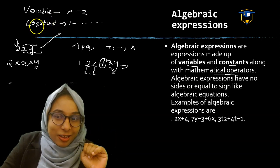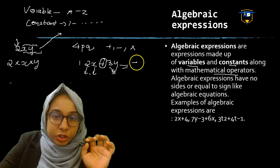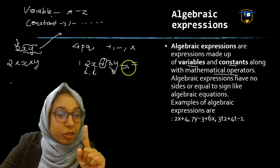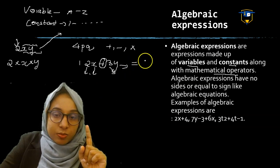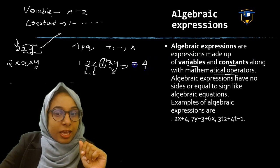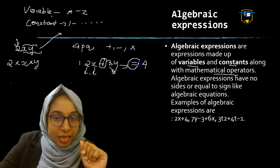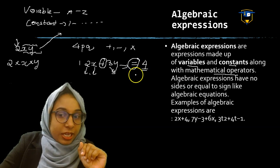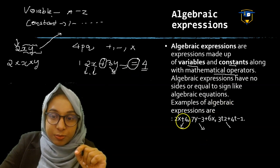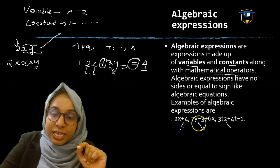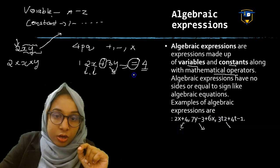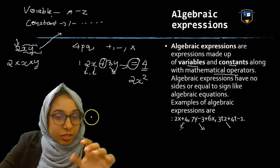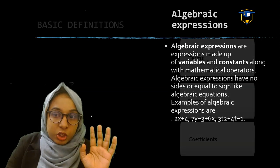Now if an Algebra Expression contains an equal sign, it is called an Algebra Equation. For example, 2x plus 3y equals 4 is an Algebra Equation. Examples of Algebra Expressions are: 2x plus 4, 7 minus 3 plus 6x, and 2x squared — these are all Algebra Expressions.